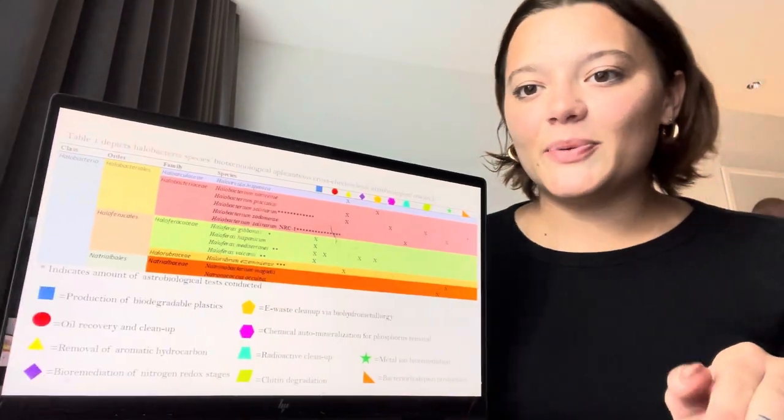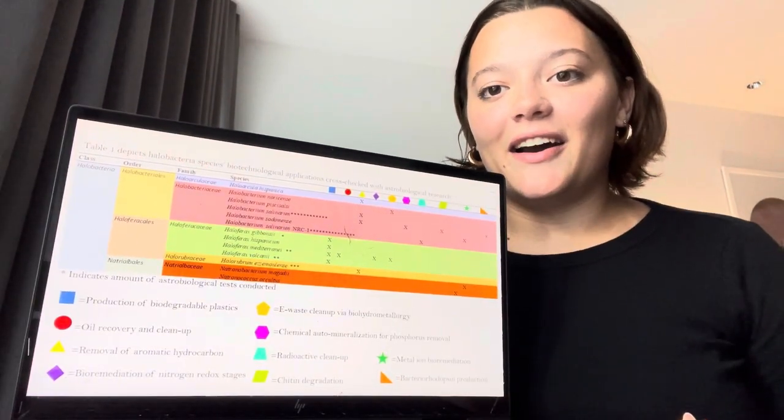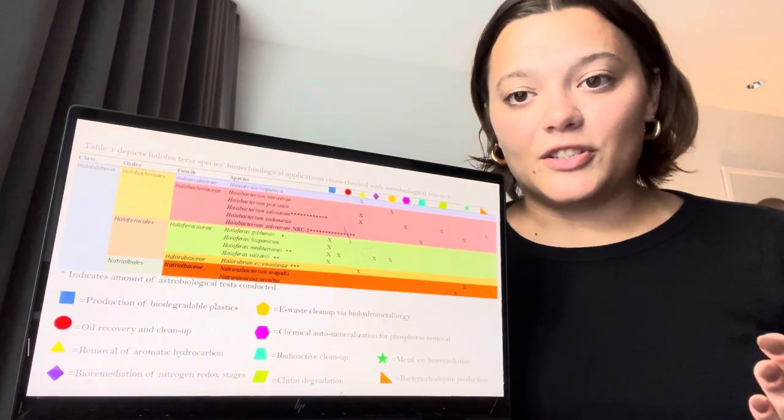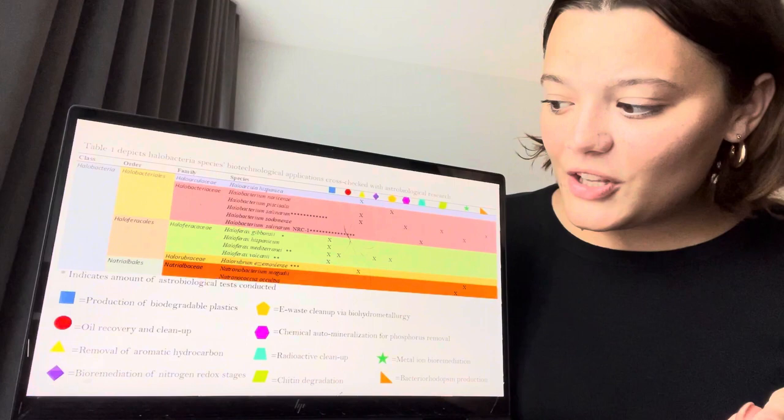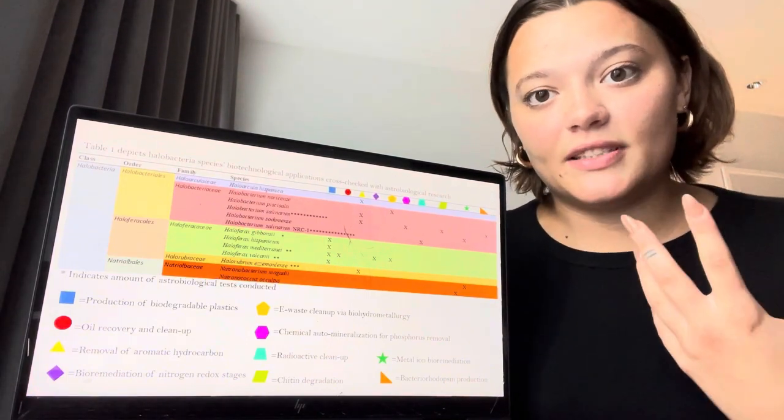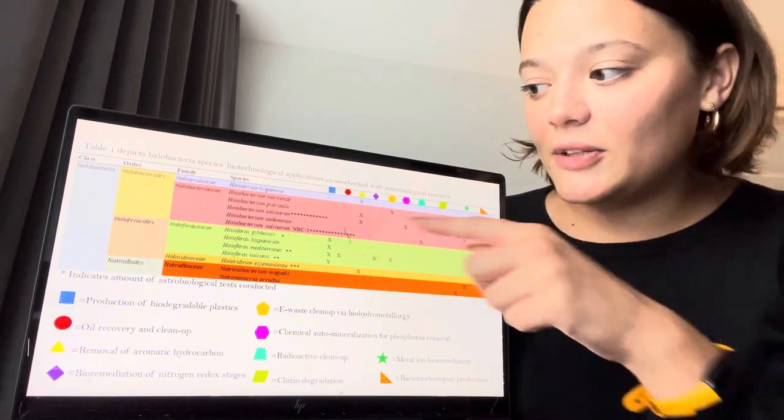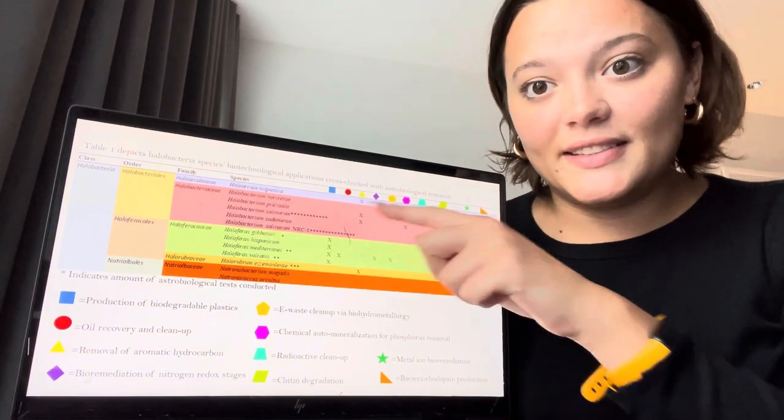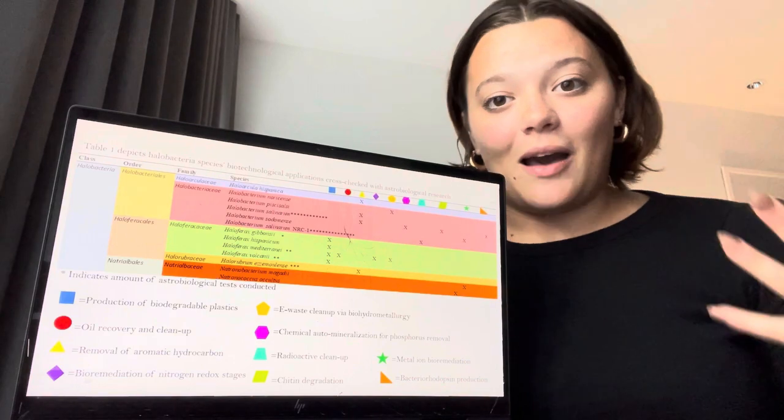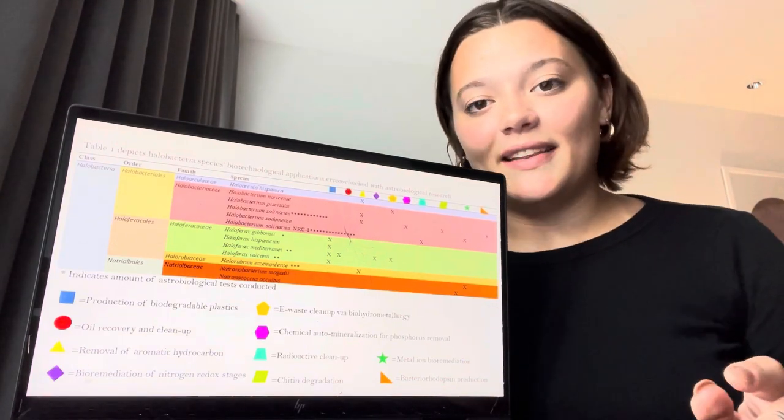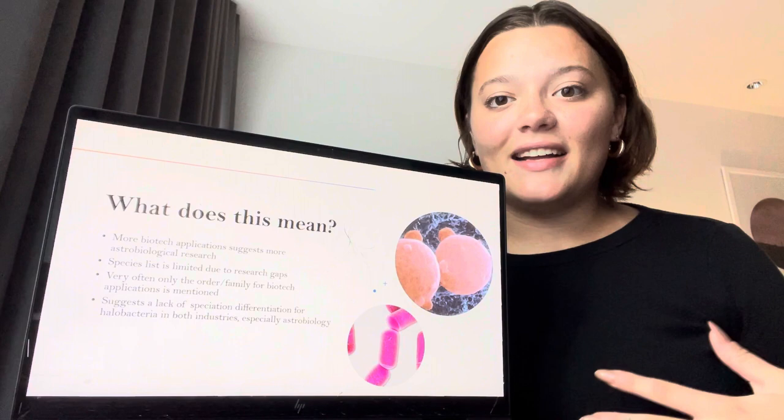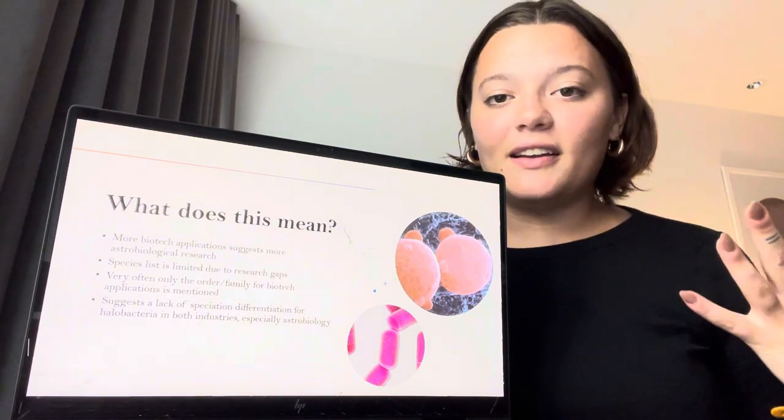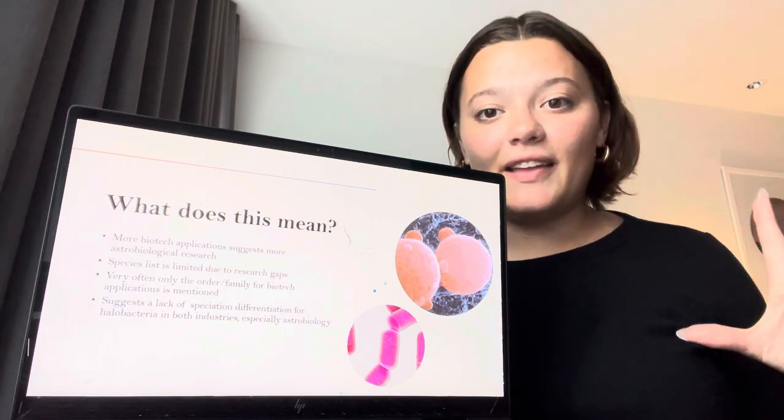So this was the comparison between whether or not it was mentioned in astrobiological studies. You can see that the majority of the species that are explored include Halobacterium salinarium, and that includes another one of its strains. There's a pretty big gap in the astrobiological explorations within this. What it tells us is that the majority of what we're seeing follows one specific species and we need to expand beyond that.